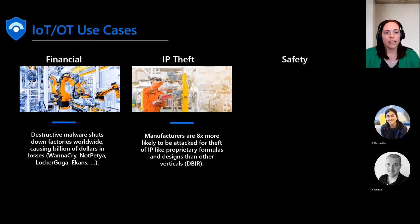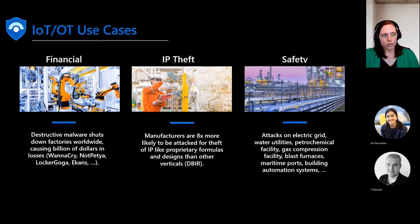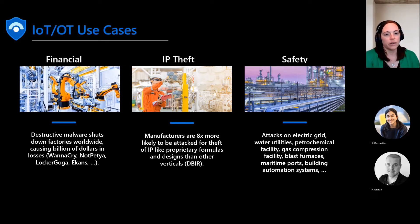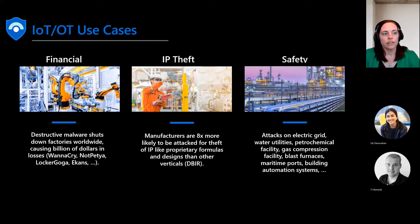Here are some of the main use cases for IoT and OT environments and why this is important. Within operational technology, there are three major areas of risk. The first is financial — shutting down factories causes billions of dollars in losses. The second is IP theft — manufacturers are eight times more likely to be attacked for theft of IP. The last is safety attacks, with examples including electric grids, gas compression facilities, water utilities, and any large production facility.